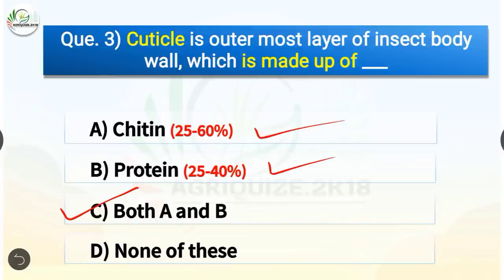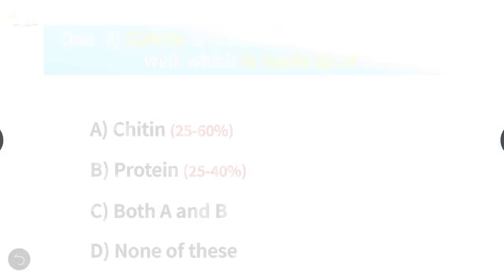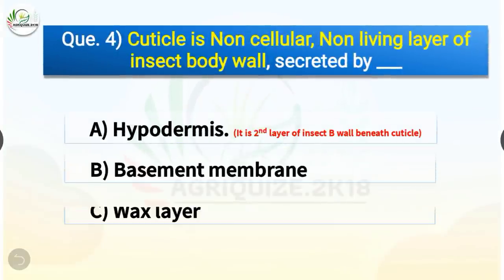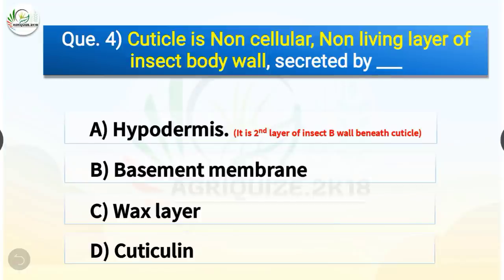Chitin constitutes 25 to 60% and protein constitutes about 25 to 40%. Question number 4. Cuticle is a non-cellular, non-living layer of insect body wall secreted by which layer? The options are hypodermis, basement membrane, wax layer, or cuticulin. The correct answer is option A, hypodermis. Cuticle is secreted by hypodermis, which is the second layer of insect body wall beneath the cuticle, also called epidermis, and its main function is to secrete cuticle.